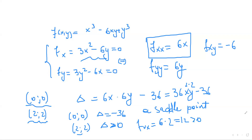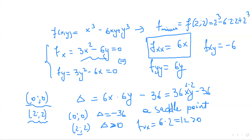To find the local minimum value, we substitute (2, 2) into the original function. f(2, 2) equals 2³ minus 6·(2)·(2) plus 2³, which equals 8 minus 24 plus 8, giving negative 8. So the local minimum value of this function is negative 8.